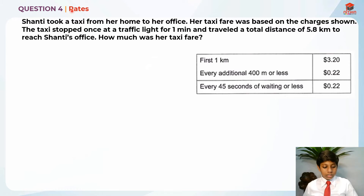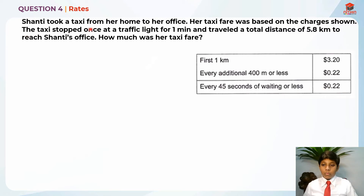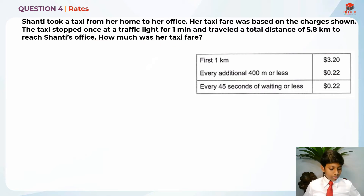This question is testing us on rates. Let's read the question first. Shanti took a taxi from her home to her office. Her taxi fare was based on the charges shown: the first kilometer is $3.20, every additional 400 meters or less is 22 cents, and every 45 seconds of waiting or less is 22 cents. The taxi stopped once at a traffic light for one minute and traveled a total distance of 5.8 kilometers to reach Shanti's office.